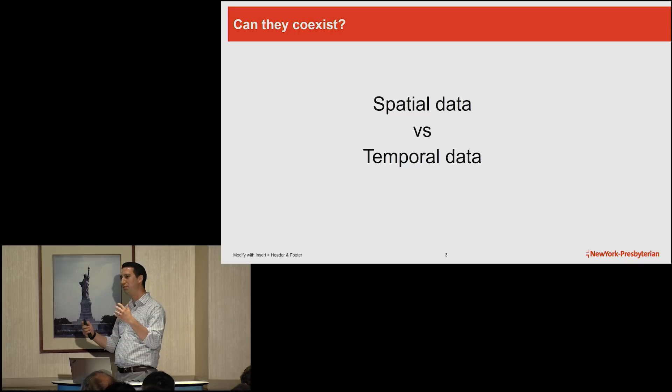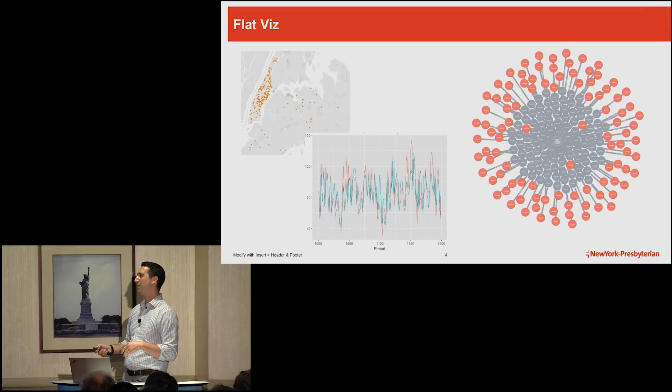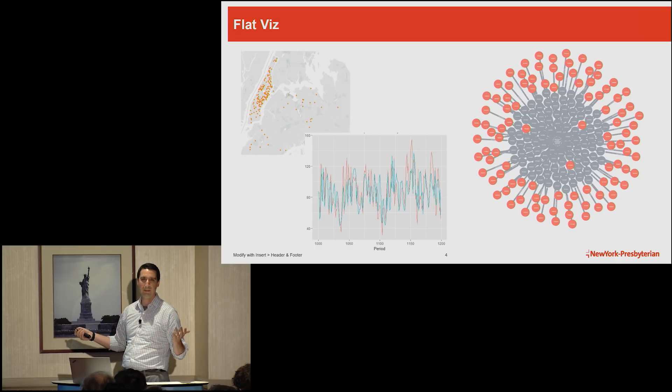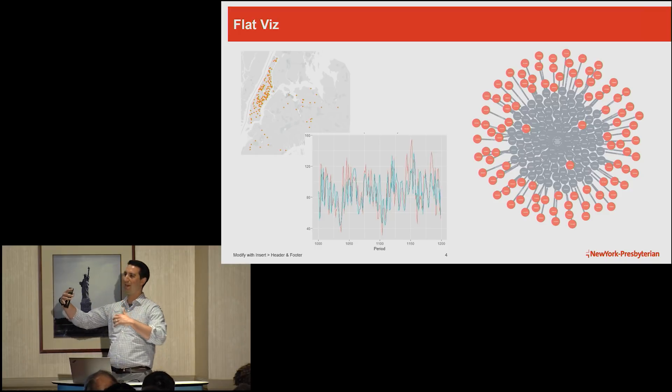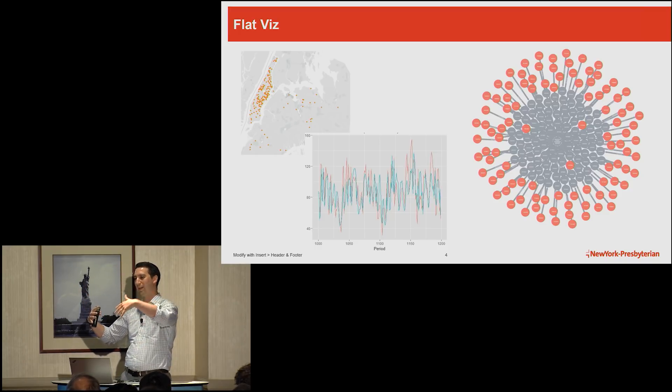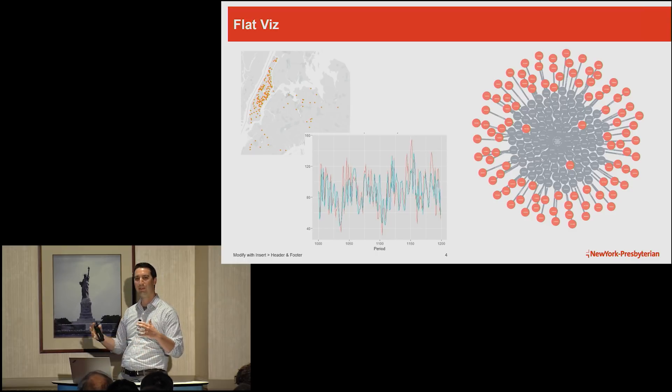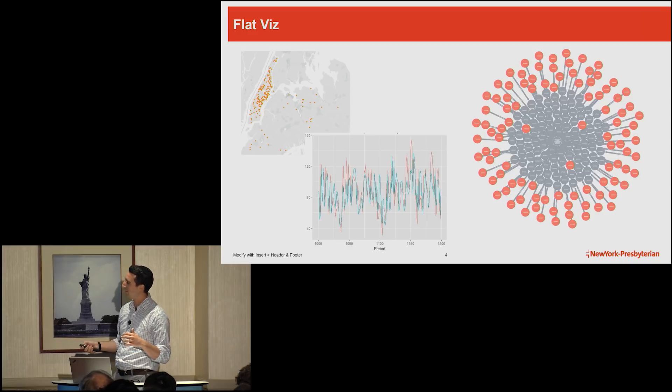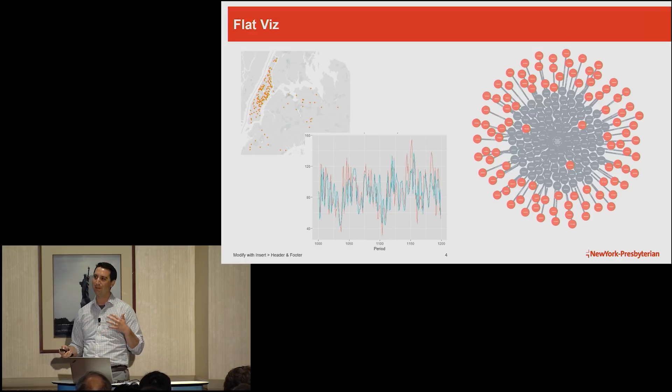We have this problem where spatial data and time data, they don't always work well together. For example, you have these maps, and this is a bunch of events that happen over maybe months, maybe years, maybe seconds, who knows. Here's a time series, but this could be many events, or we don't have a good way of taking what happened over time versus what happened at a given place. And we end up in graph data land with a lot of these really flat kind of hairball. But we want to be able to understand, let's say that these are procedures, we want to understand where these procedures happened, what procedures happened, and when they happened over time. So that was the problem that we tried to solve.